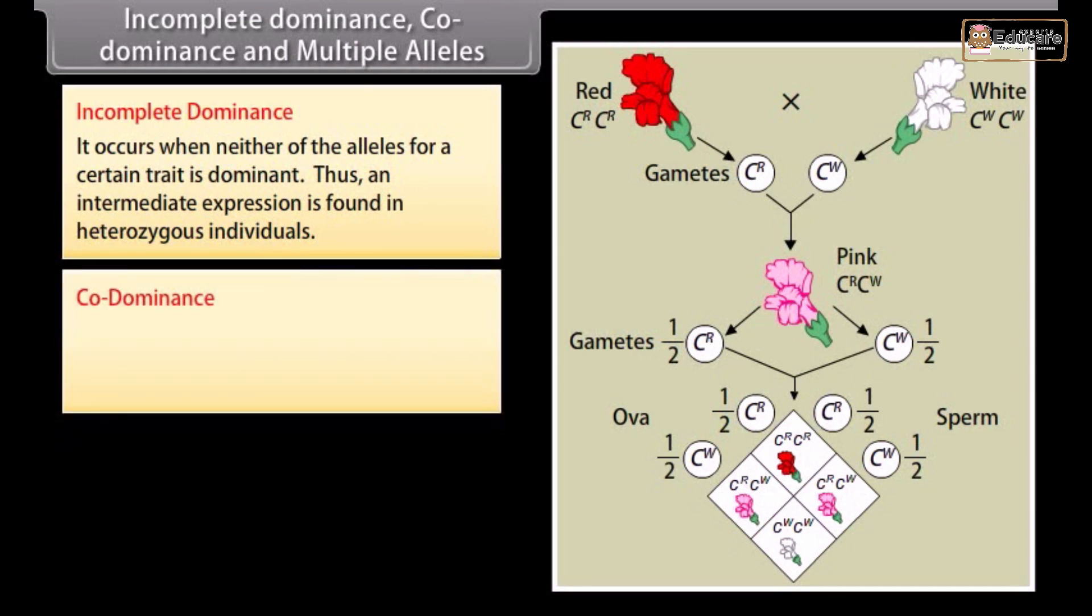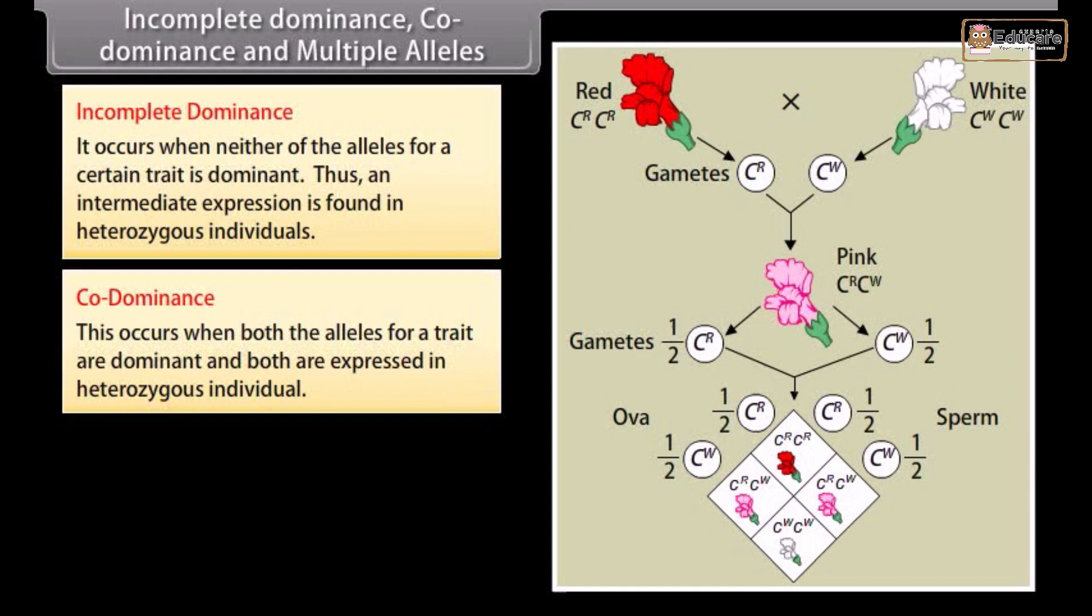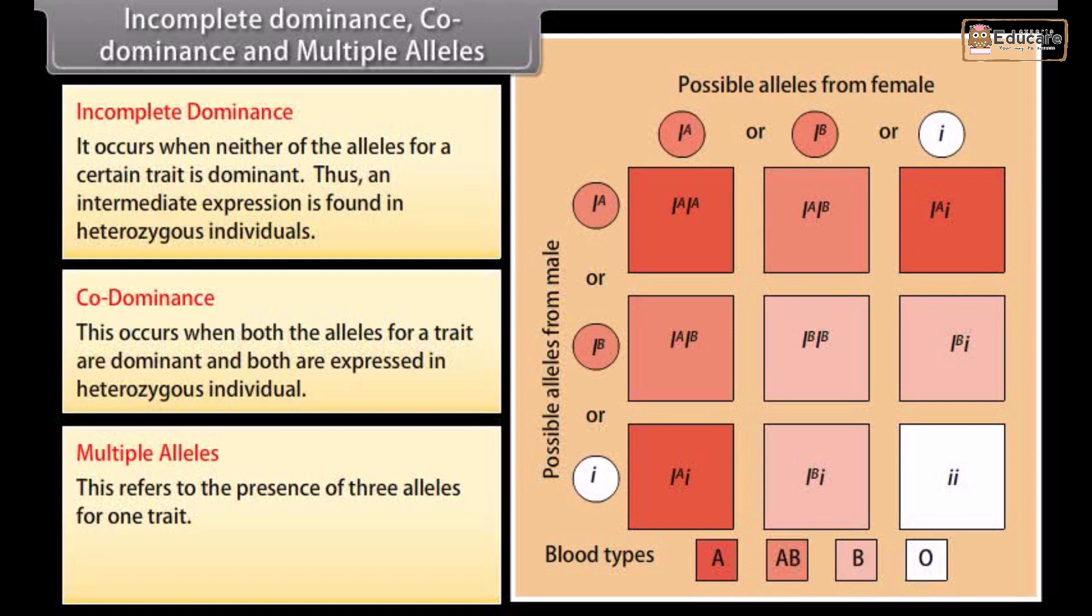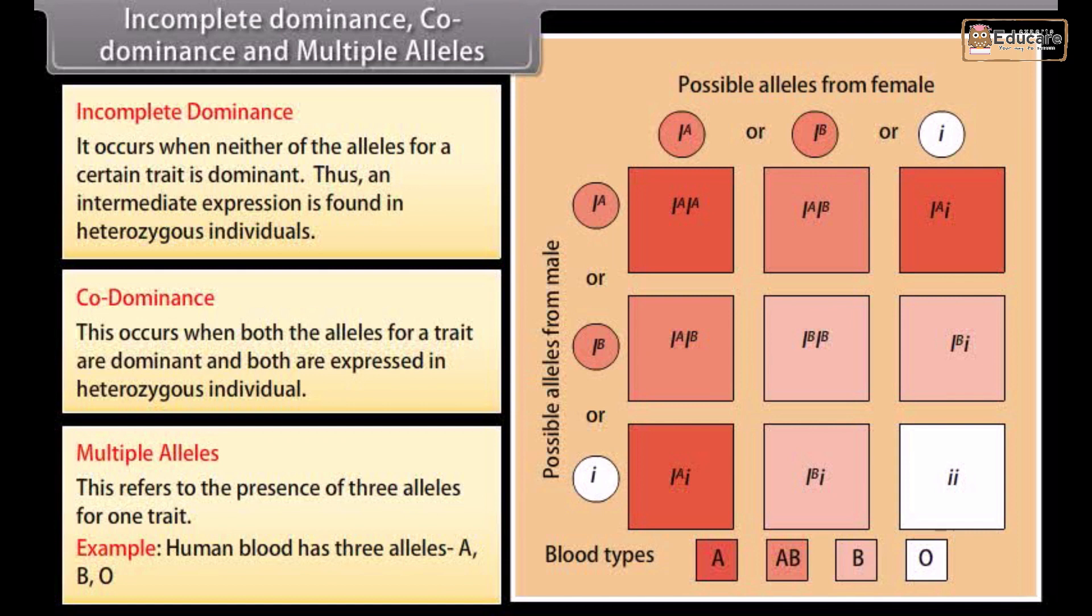Codominance: This occurs when both the alleles for a trait are dominant and both are expressed in heterozygous individual. Such a phenomenon can be observed with multiple alleles. Multiple alleles: This refers to the presence of three alleles for one trait. Example: Human blood has three alleles A, B, O.